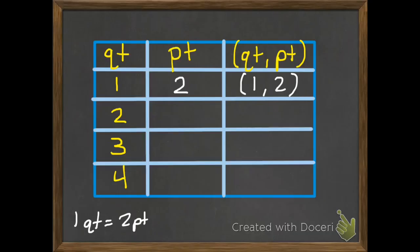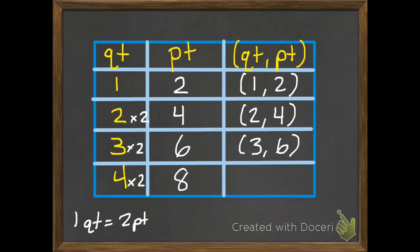Okay, now if we have two quarts, and every quart equals two pints, we have two times two, which equals four. And our ordered pair here will be two, four. If we have three quarts, and each of those equals two pints, three times two equals six. And we have three, six. And last of all for our table, if we have four quarts, and there's two pints in each quart, we get eight pints.